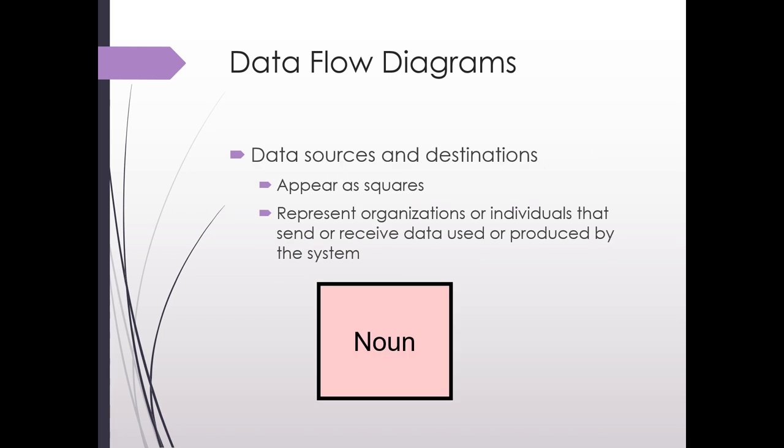So we first have the data sources and destinations. These appear as squares within the data flow diagram. One of the key things is that you put a noun within the square. So usually this would be a person and you would put in their position rather than a name, an organization, or a department, or a collective group of individuals, say customers or suppliers. So these are the groups that either provide information into the process or receive data and information out of the process.